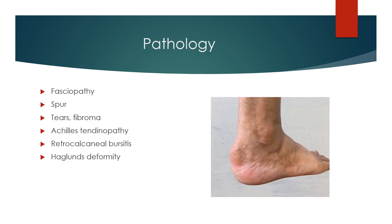To summarize, the pathologies to look for in plantar fasciopathy are: plantar fascial thickening, a calcaneal spur, tears or a fibroma, Achilles tendinopathy, retrocalcaneal bursitis, and Haglund's deformity.